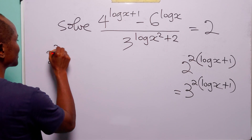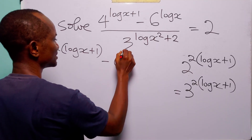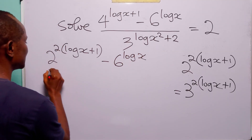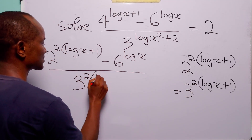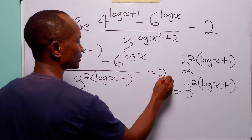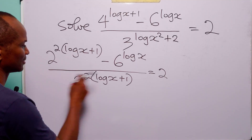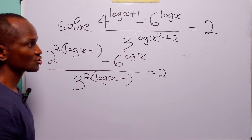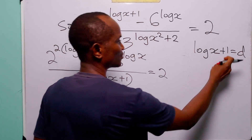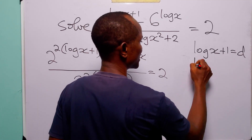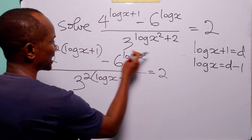The equation becomes: 2 to the power 2 times log x plus 1, minus 6 to the power log x, divided by 3 to the power 2 times log x plus 1, equals 2. Notice that we have log x plus 1 appearing in two places, so let log x plus 1 equal d. Subtracting 1 from both sides gives log x equals d minus 1.